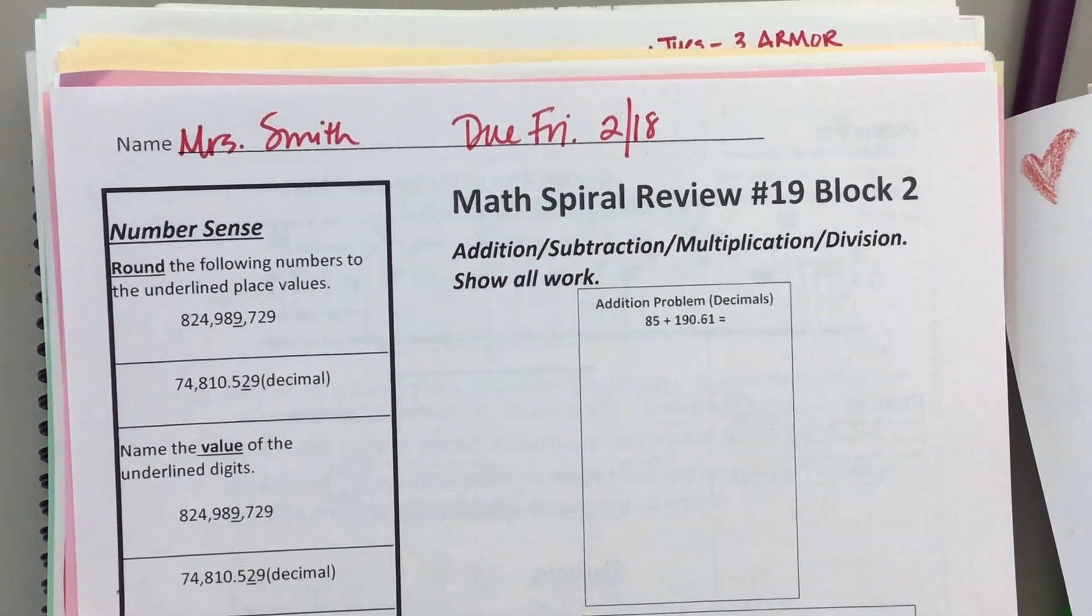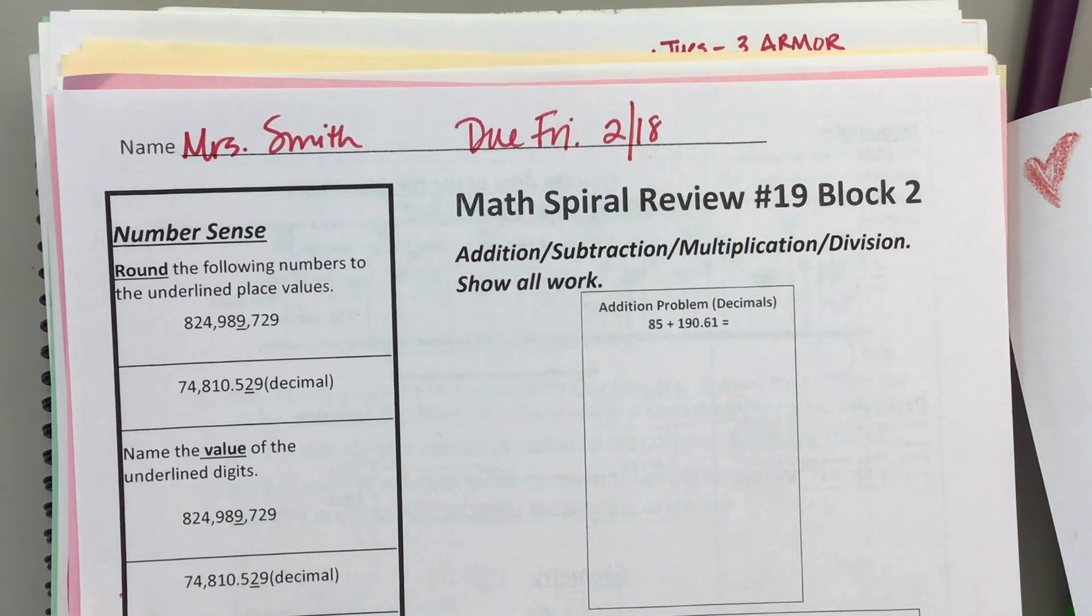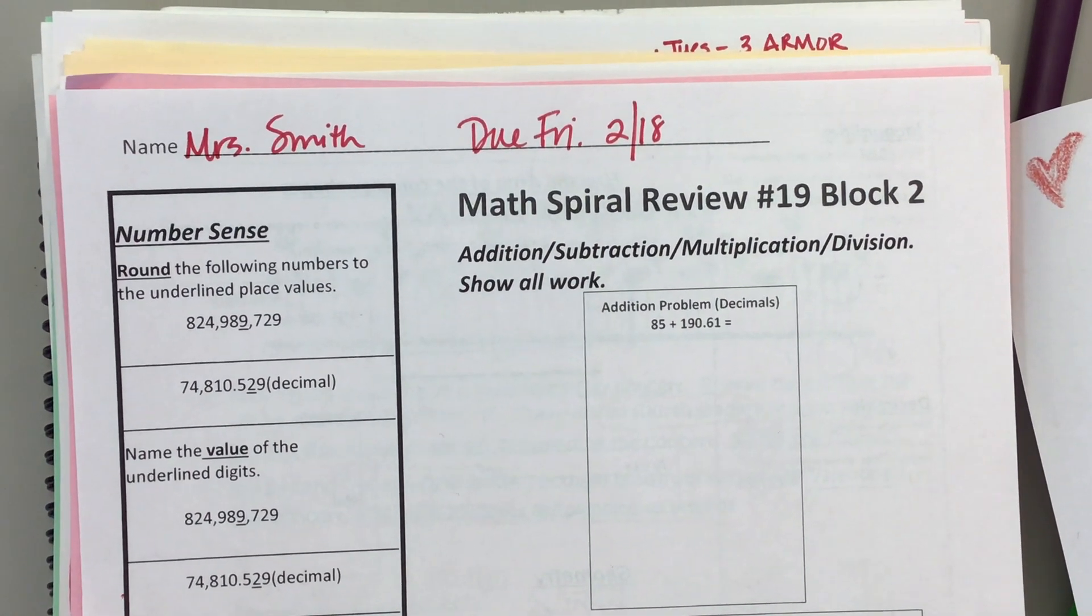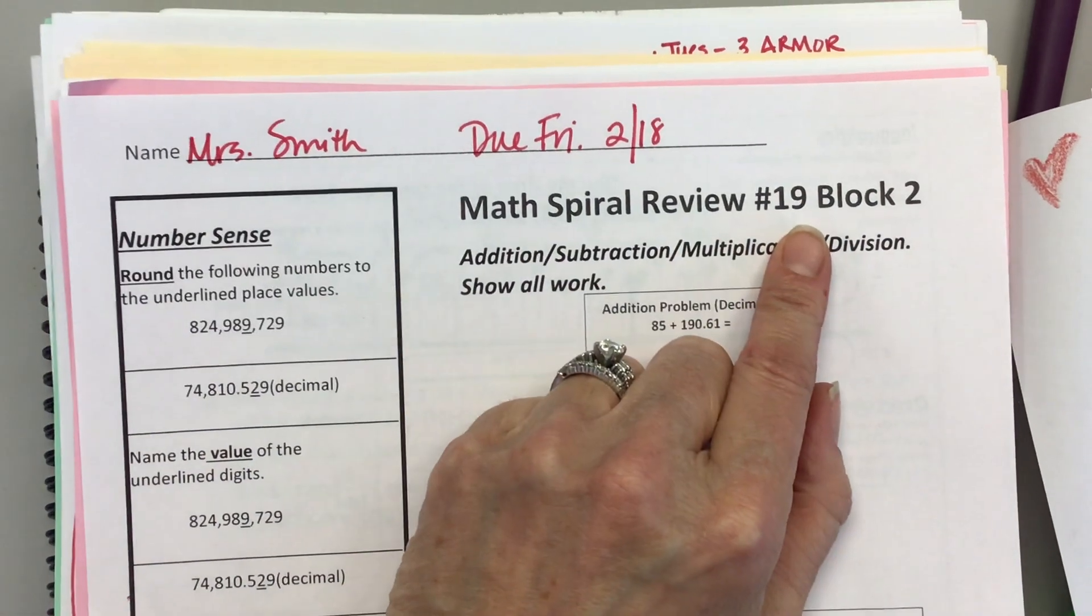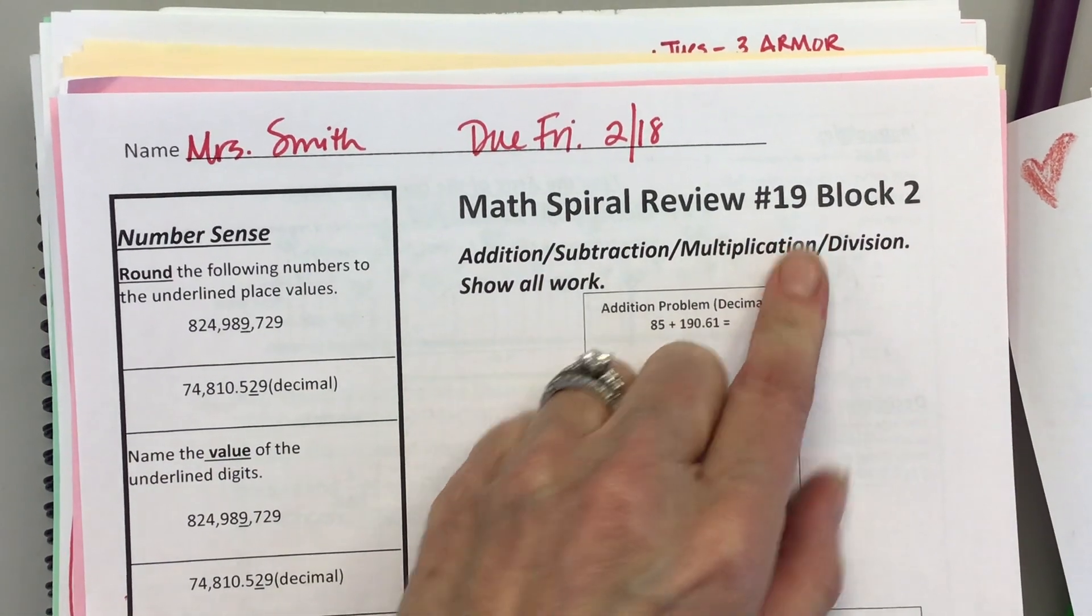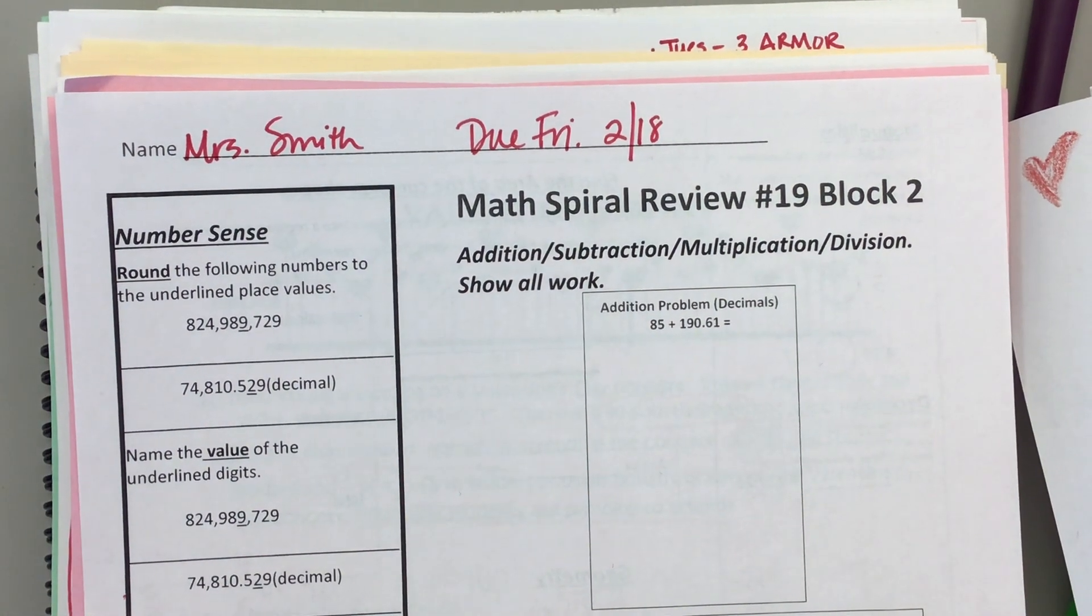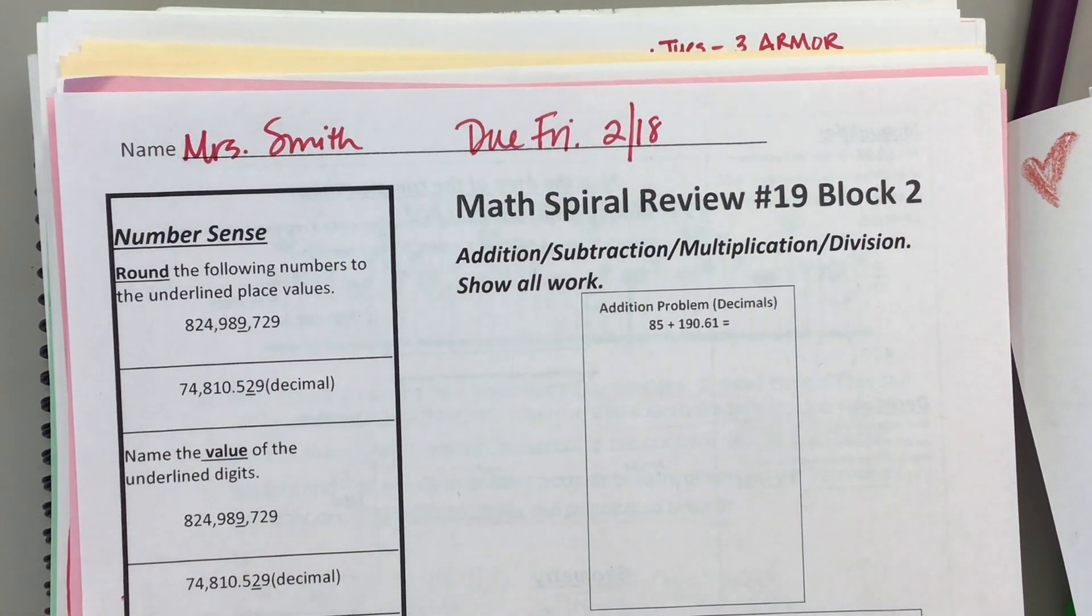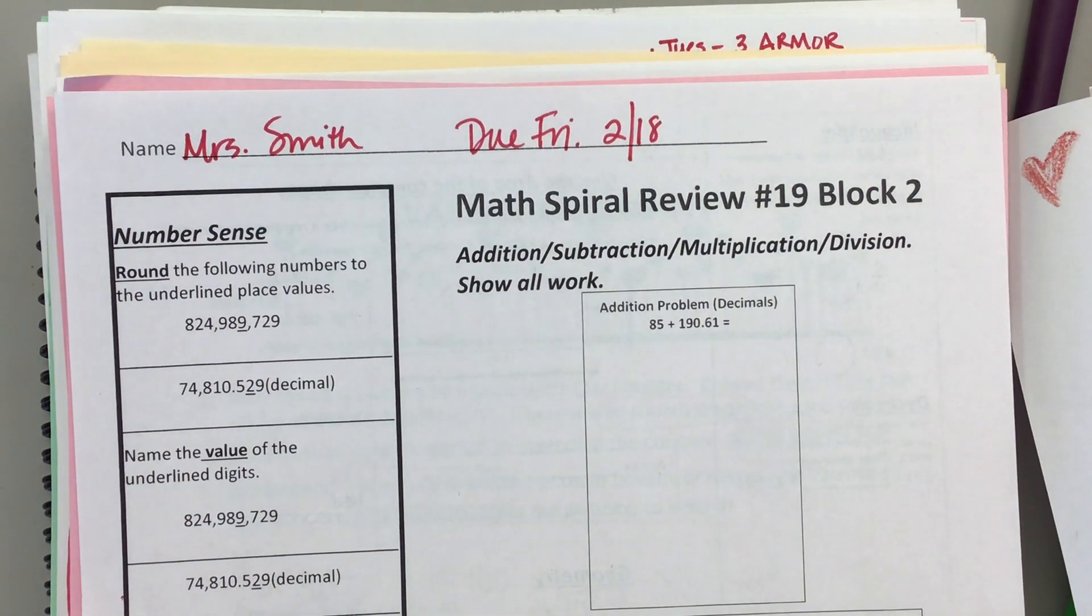Good afternoon. Today is February 14th, Happy Valentine's Day. Today we're going over spiral review 19 for block 2, and this spiral review is due on Friday, February 18th. You can turn your spiral review in on Monday, Tuesday, Wednesday, or Thursday for a pre-check, and you can then correct it and turn it back in on Friday.